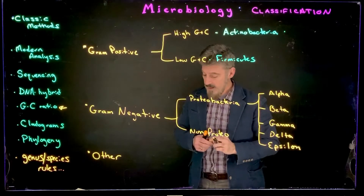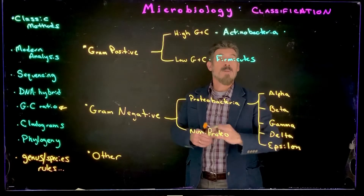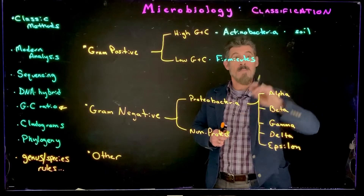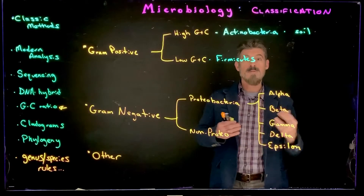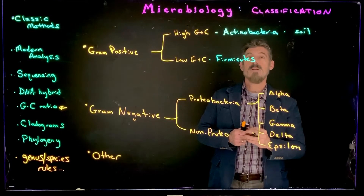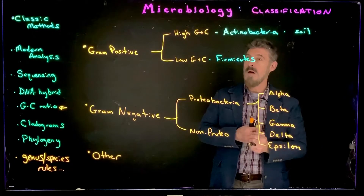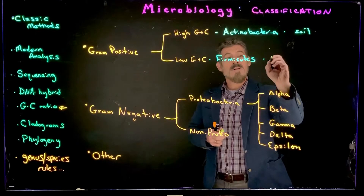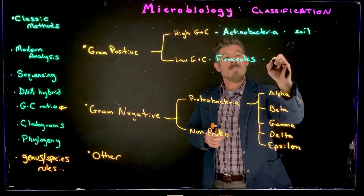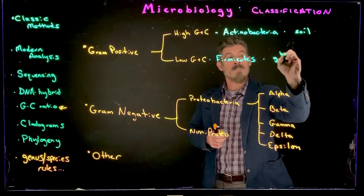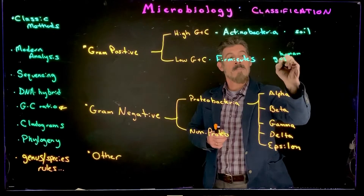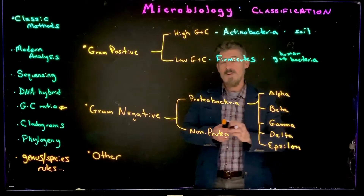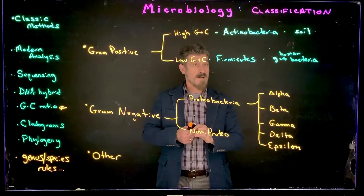The Actinobacteria group is often found in the soil. They're important for recycling nutrients, nitrogen fixation, and a lot of other important things they do within the soils. Firmicutes are important gut bacteria — specifically the human gut — and they make up a large portion of the gut bacteria.